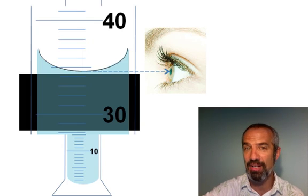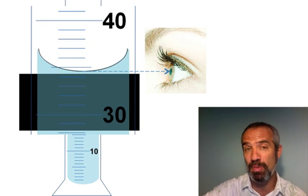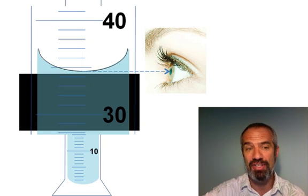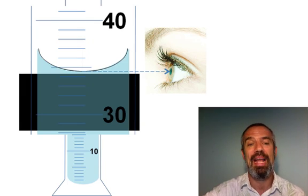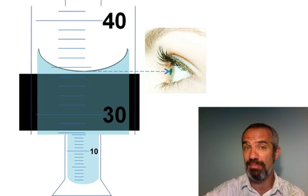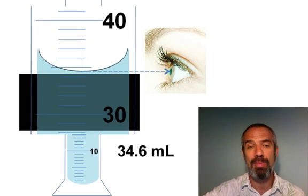And when you do, remember: read the scale one digit past what's incremented. That's what we learned in the first one. Because this is incremented every one milliliter, we should be reading to the tenths place. And don't forget to put the unit on there, right? That was our first rule. So maybe we're thinking thirty-four point six milliliters.